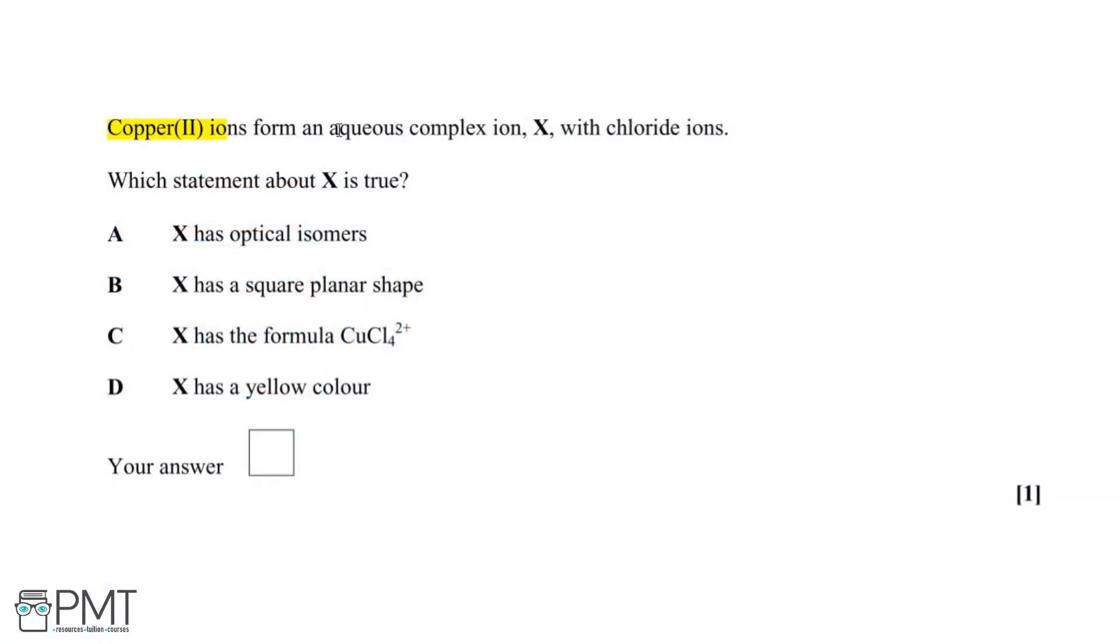Copper 2 ions form an aqueous complex ion X with chloride ions. Which statement about X is true? X has optical isomers. X has a square planar shape. X has the formula CuCl4 2+, or X has a yellow colour.